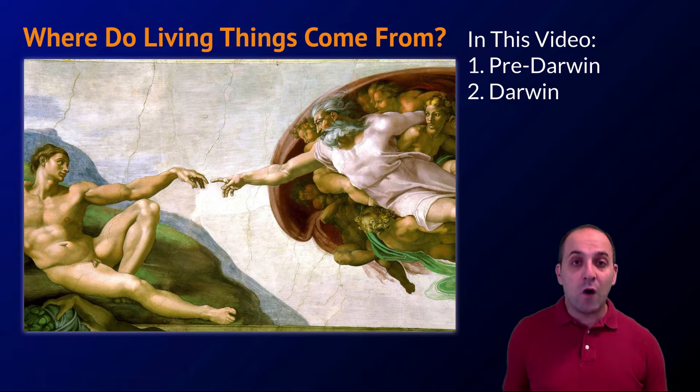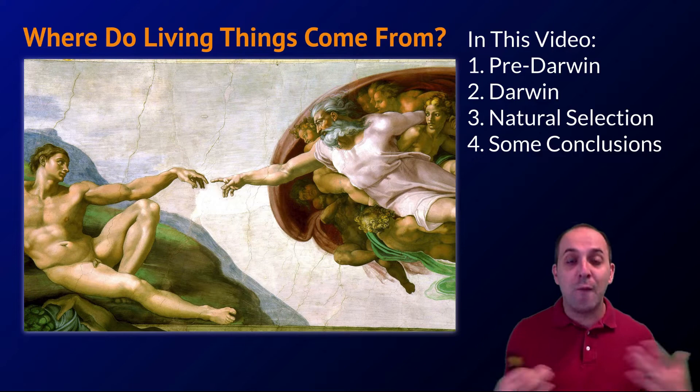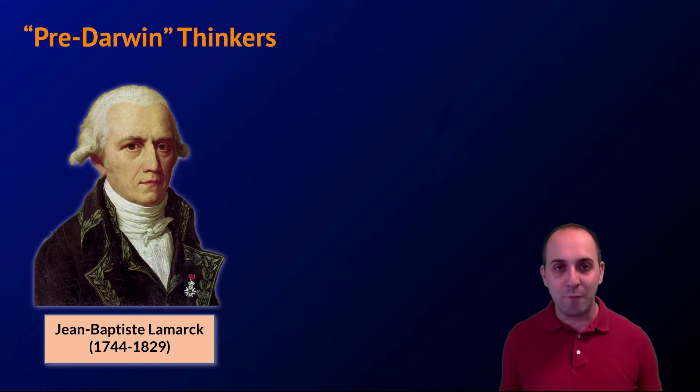We're going to start our discussions of evolution by talking about Charles Darwin and his development of the theory of natural selection. In this video we're going to talk about what things looked like before Darwin, what Darwin did, how natural selection works, and some conclusions from natural selection about the larger organization and history of life on earth. Let's begin.